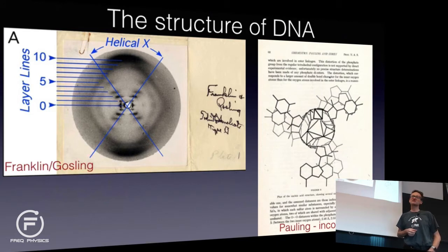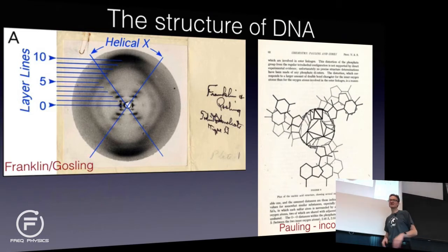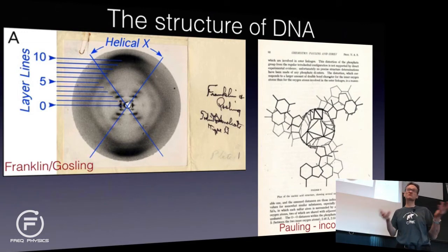We tend to sweep such things under the rug in the history of science, and I think that's really stupid. Because when we present science to students, we send the signal that every single prediction we ever made was right — and that's not the case. It's rather the opposite: 95 percent of the predictions we make are wrong.